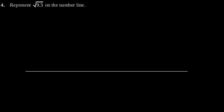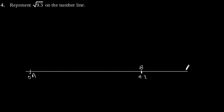On this number line we need to mark a line of length 9.3. Suppose we mark one endpoint as A and the other as B, so the length of AB is 9.3.